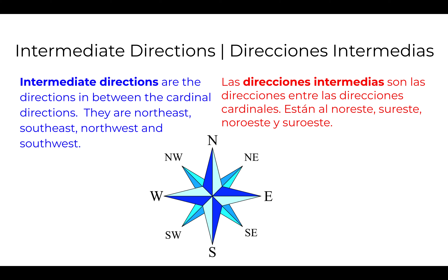Intermediate directions are the directions in between the cardinal directions. They are northeast, southeast, northwest, and southwest. Las direcciones intermedias son las direcciones entre las direcciones cardinales. Están al noreste, sur-este, noroeste, y sur-oeste.